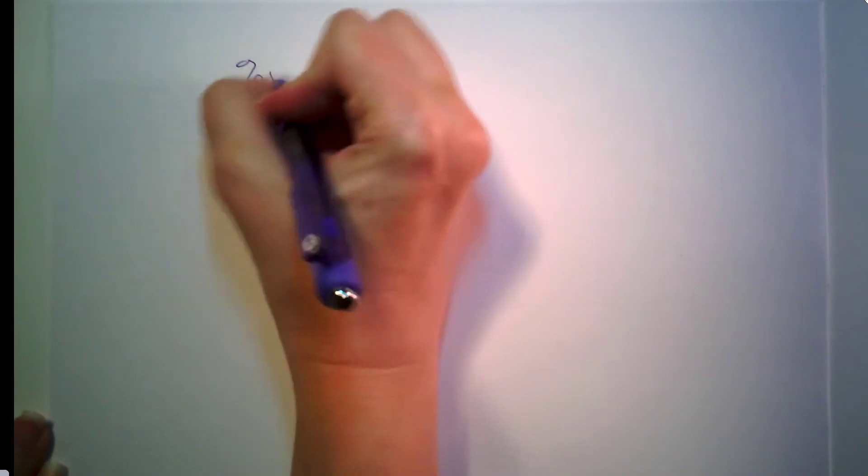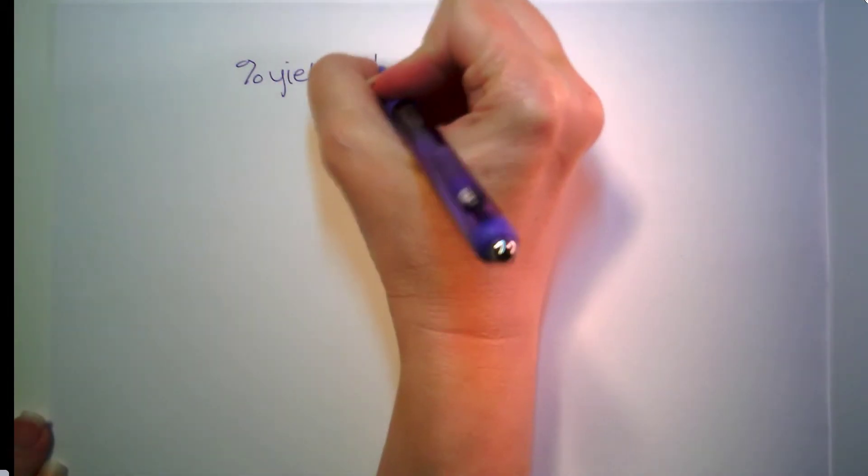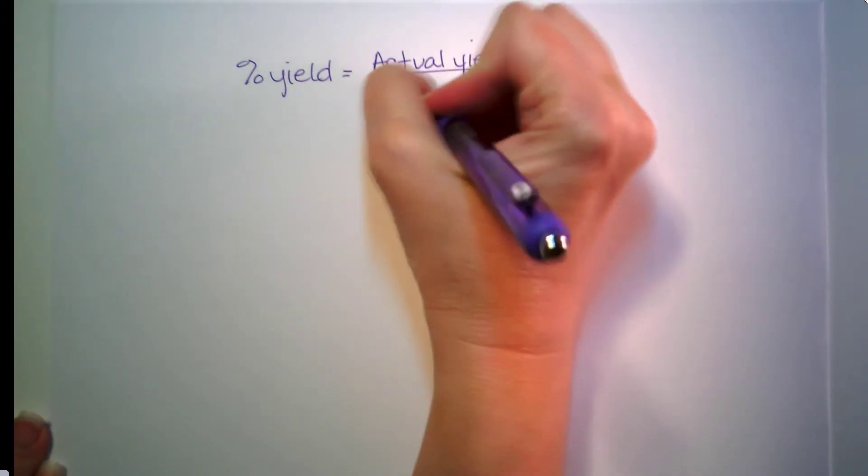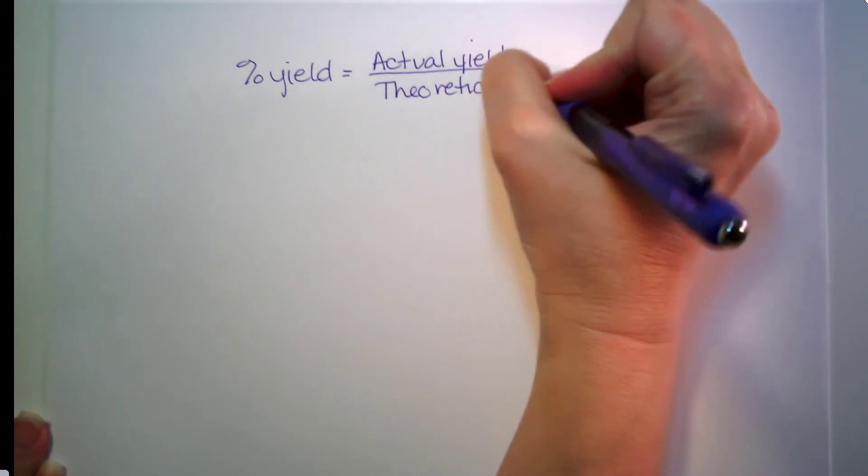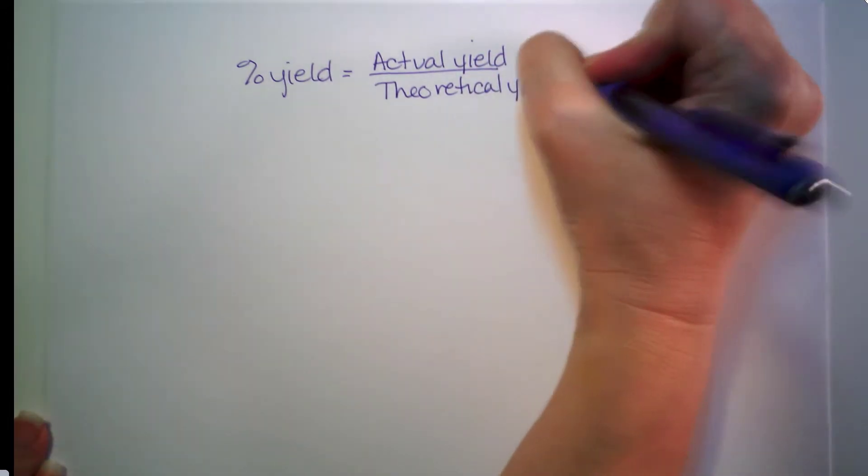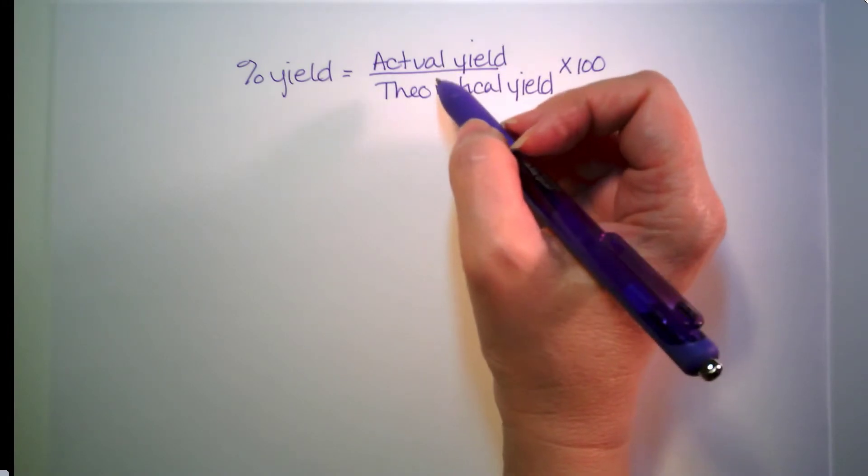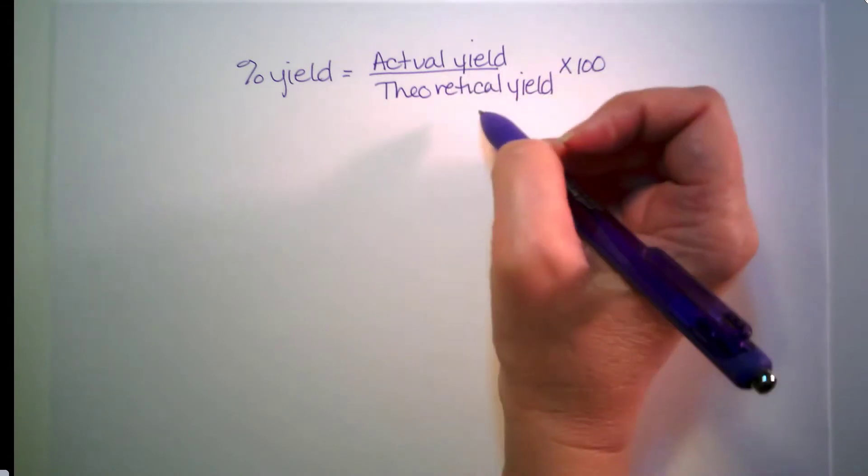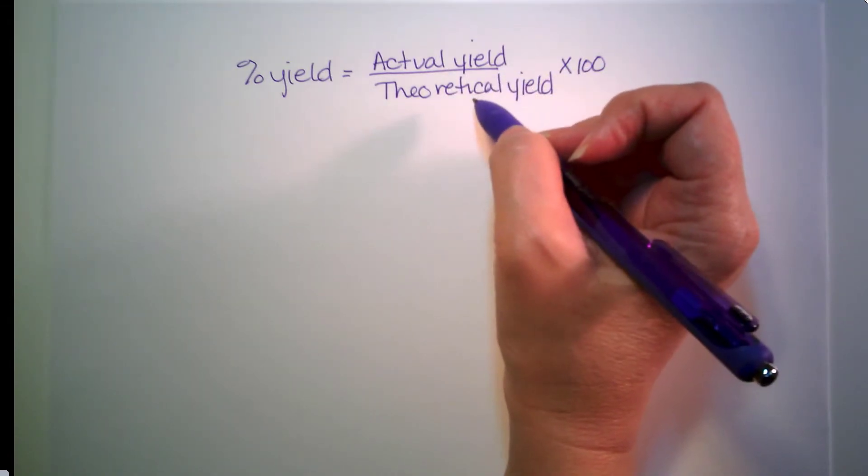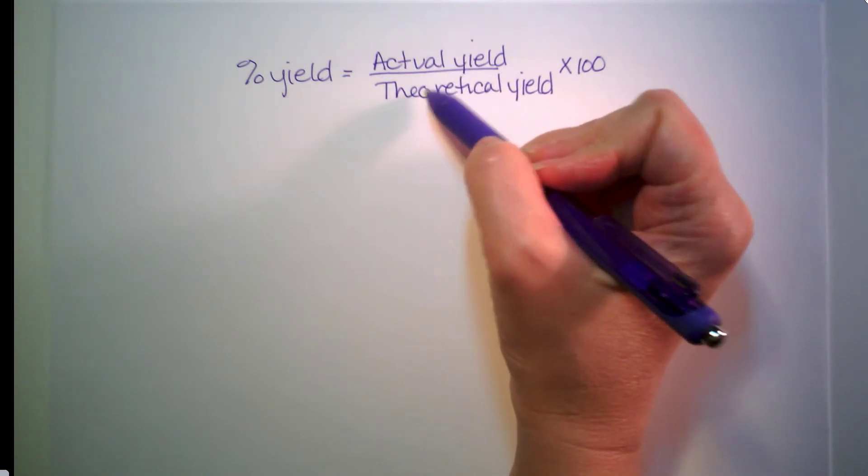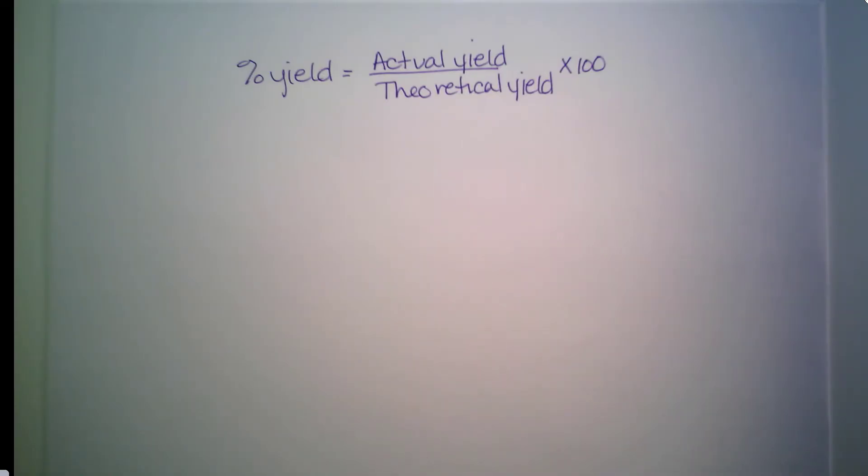So the formula that we're going to be dealing with should look a little familiar to you. Percent yield is equal to the actual yield over the theoretical yield times 100. So what does any of that mean? The actual yield could be compared to what you actually get on a test or quiz. The theoretical yield could compare to how many questions you could have gotten if you got a perfect score.